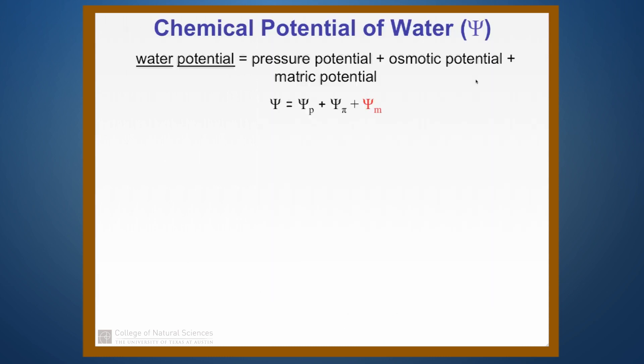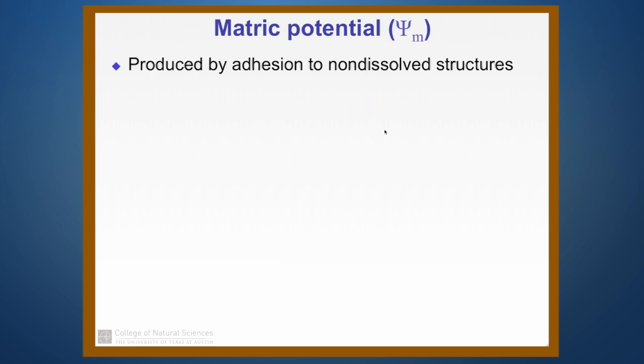Now we're not going to talk about the osmotic potential, but we do need to talk about the matric potential. And the reason this is important is because it has a big effect on the plant's ability to get water out of the soil as the soil dries. So what is matric potential? The matric potential is produced by adhesion of water to non-dissolved structures, so to things like the xylem vessel walls and to soil particles.